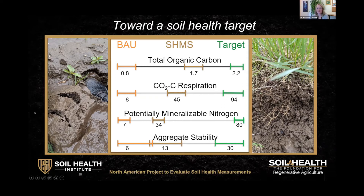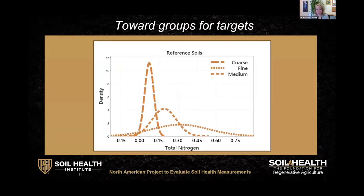We're also working to figure out what level of specificity we need to group soils so that we can have a reference base of soil health target ranges for anybody to use. It's been established that texture has an impact on the soil's ability to store carbon, which is related to just about every other soil health measurement. Using all of the unmanaged soils we had in this trial, we show here the distribution for total nitrogen for soils that fall into three broad textural groups: coarse, medium, and fine.